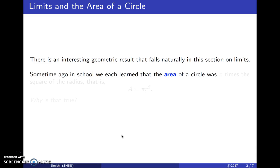Some time ago, in school, we each learned that the area of a circle was pi times the square of the radius of the circle. That is, area is πr². Why is that true?